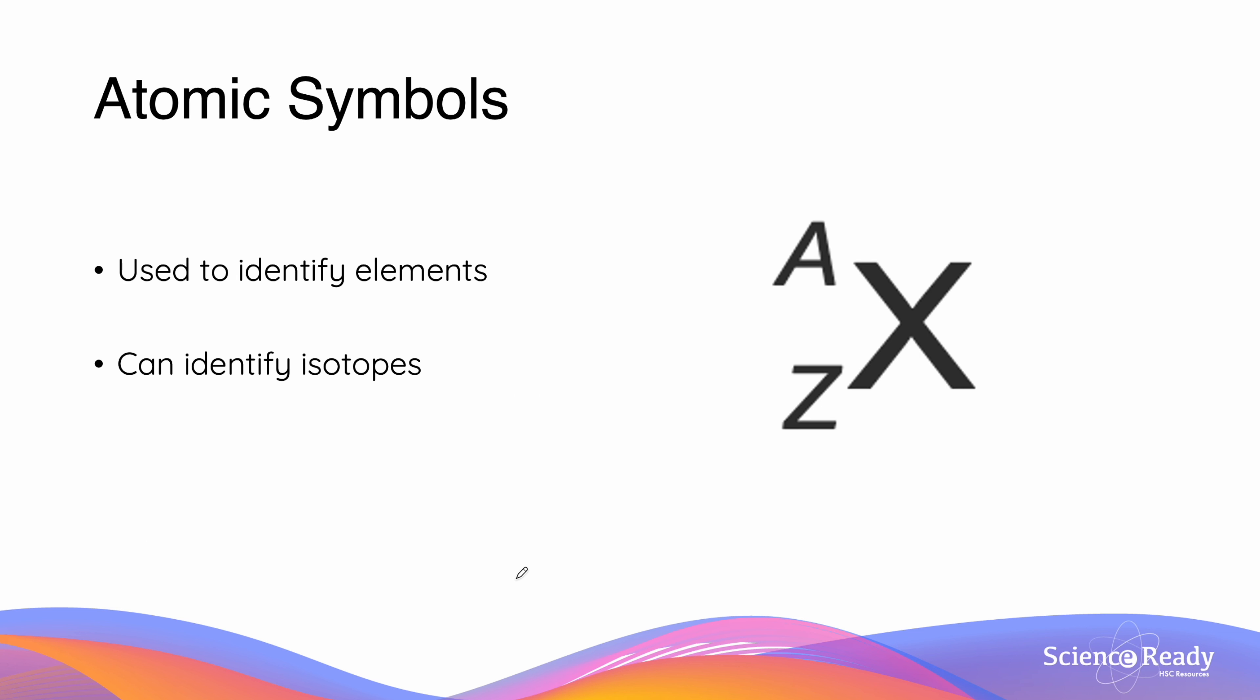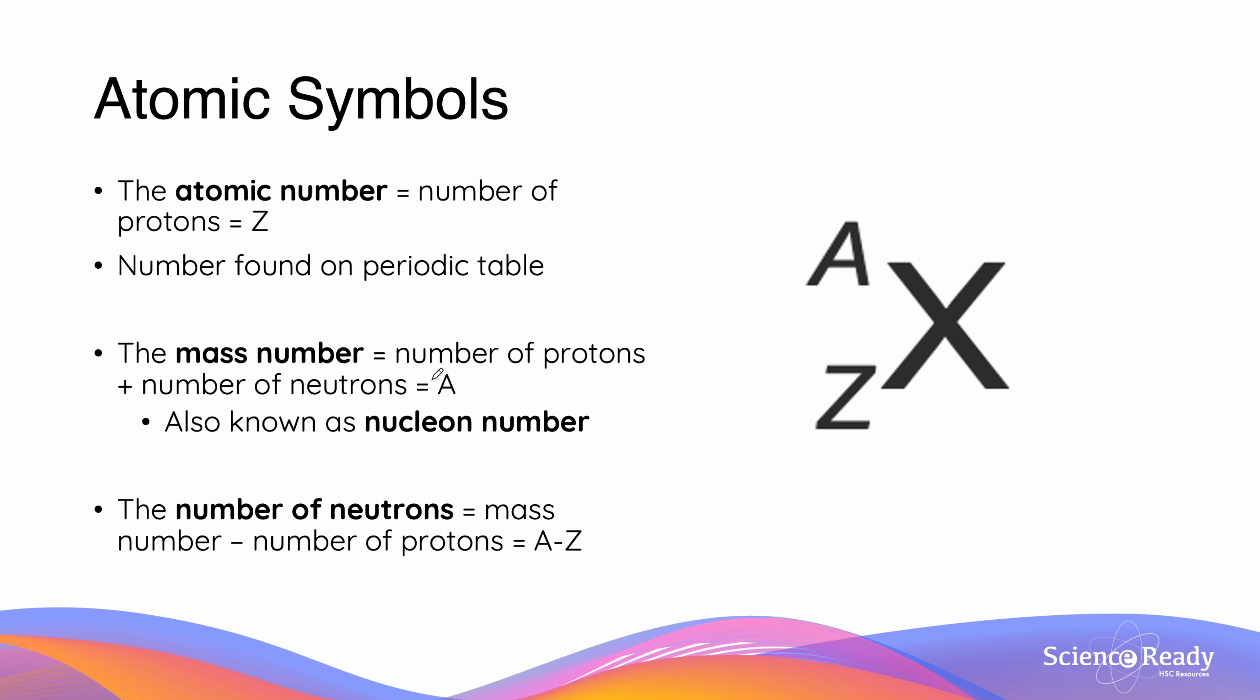Atomic symbols are symbols which we use to help identify elements on the periodic table. They can also identify what we call isotopes, which we will discuss in a moment. The atomic symbol helps tell us the composition of an element. The atomic number, denoted by the letter Z, tells us the number of protons of that element.